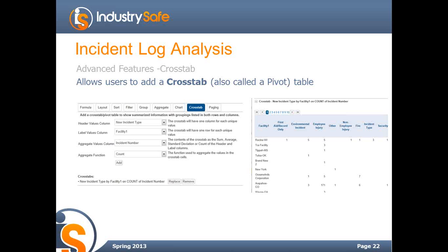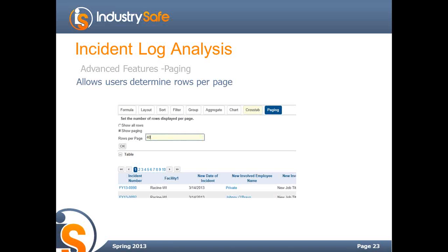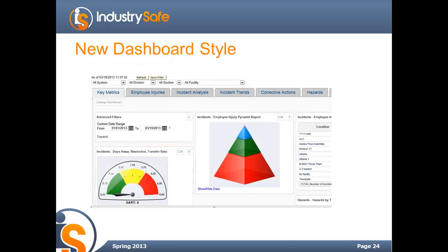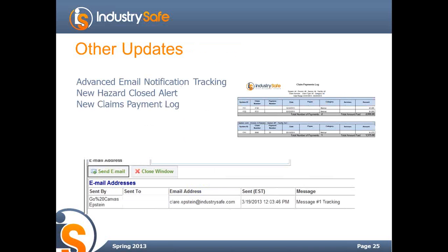If folks have any questions or comments, just send them using the question feature in the webinar panel. You can also choose how many rows you want to see on each page. We've also updated the dashboard — it has a new look and feel, a different color scheme, and the tabs within the dashboards also look different. We've updated the default tab and cleaned up what we think the defaults should be.